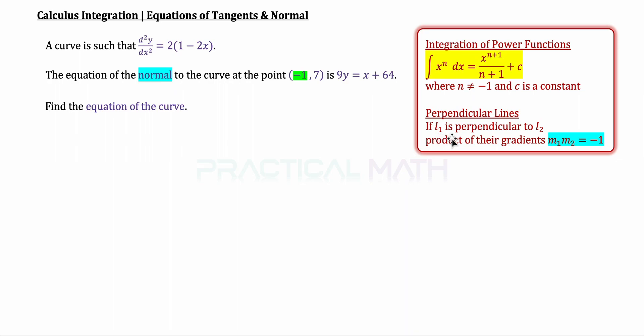So, if L₁ is perpendicular to L₂, just like the tangent is perpendicular to the normal, the product of their gradients will therefore give us -1. With these two formulas, let's start off this solution.